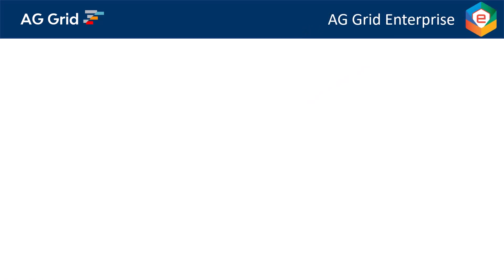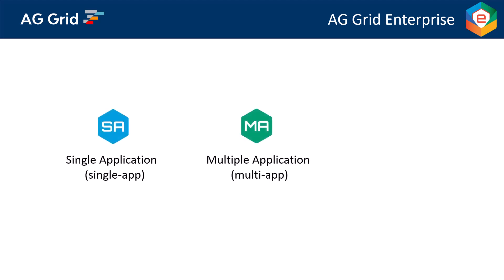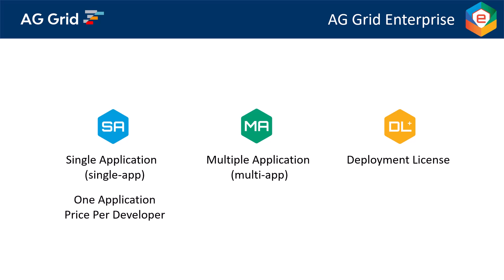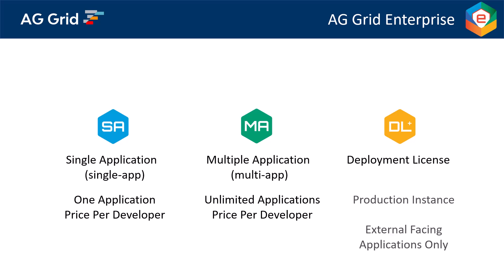There are three components to the AG Grid Enterprise license: Single Application, Multiple Application, and Deployment license. Single App licenses a group of developers for one application and is priced per front-end JavaScript developer. Multi App licenses a group of developers for unlimited applications and is also priced per front-end JavaScript developer. Deployment license licenses a production instance.